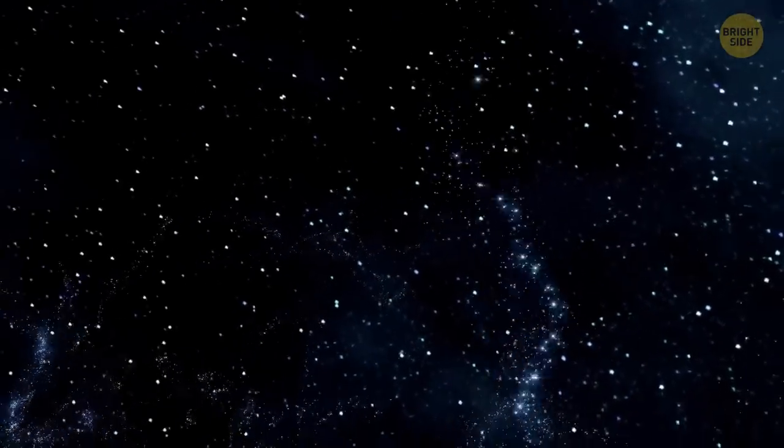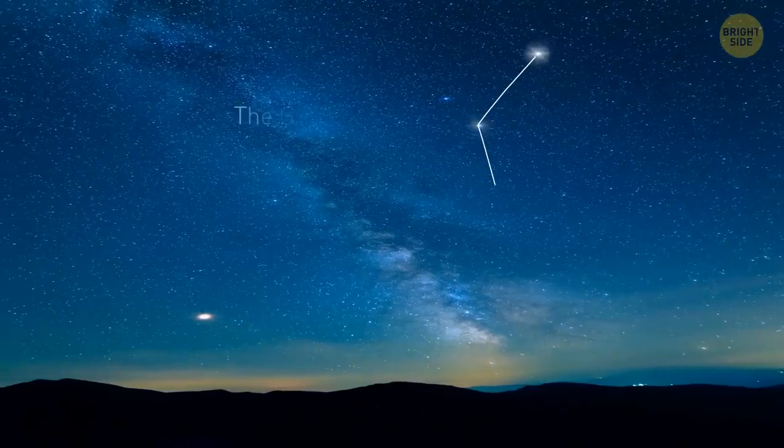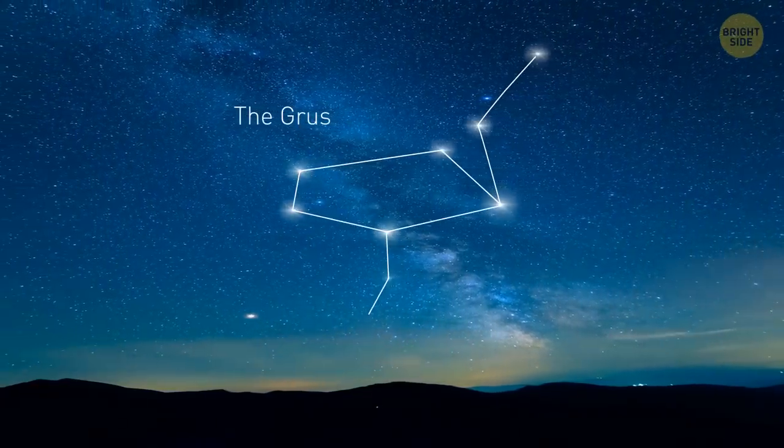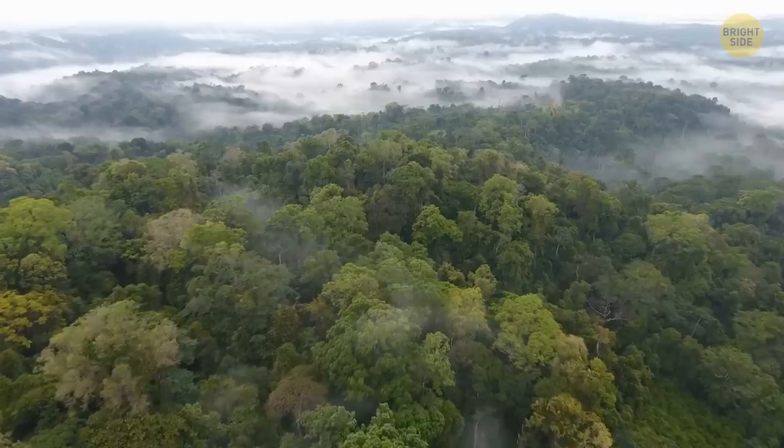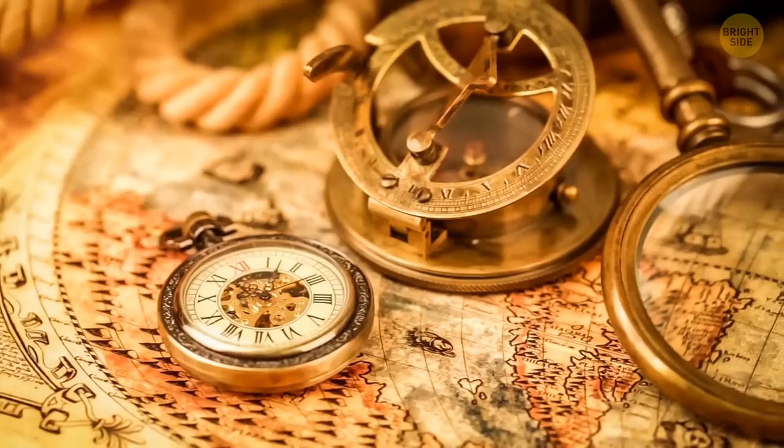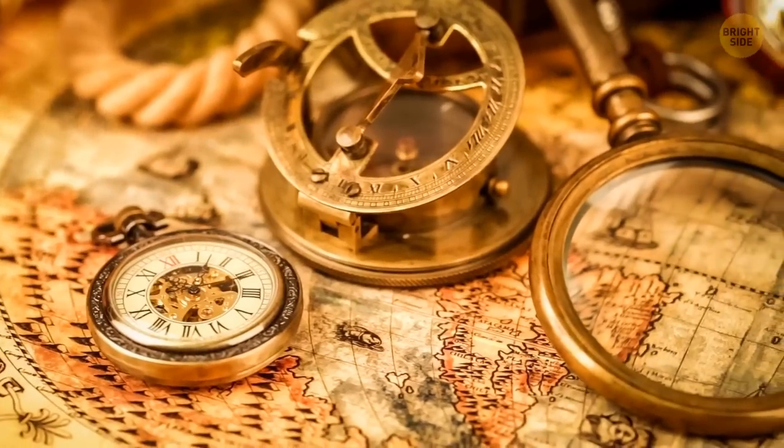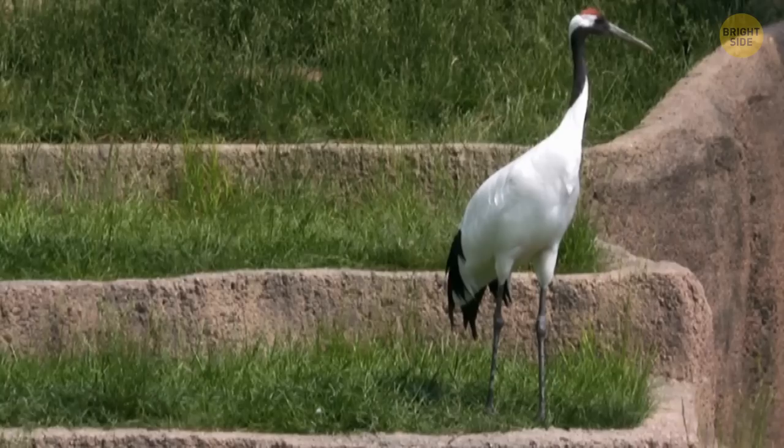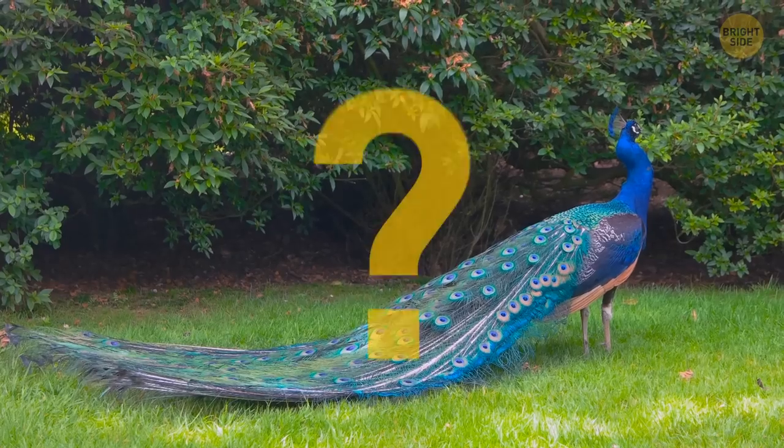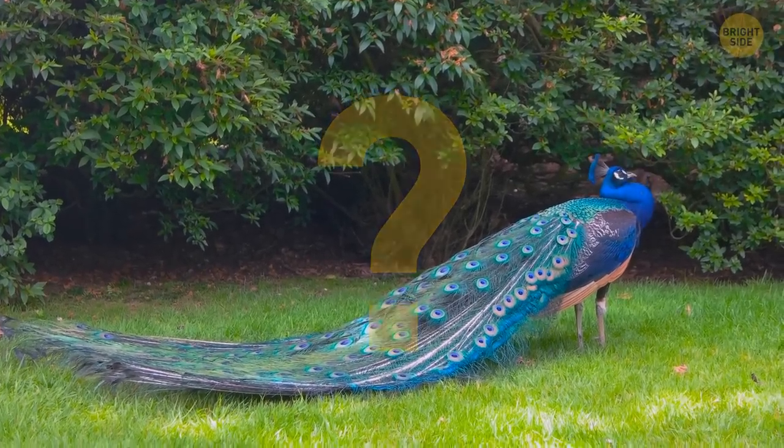And this is where all published star maps since 1603 place Grus, the constellation of the crane. But Grus is not a crane. Cranes don't live in South America. It's time we clear up the mystery of the mixed-up constellations. Apus isn't a bird of paradise. Grus isn't a crane. And we are going to see that Pavo isn't a peacock.